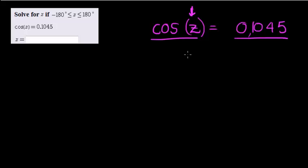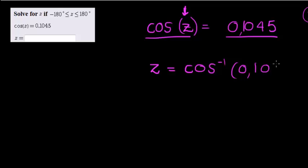In other words, to solve for z, we know that if cos of z is equal to this, then z is equal to arccos, or cos to the power of negative 1, of 0.1045.